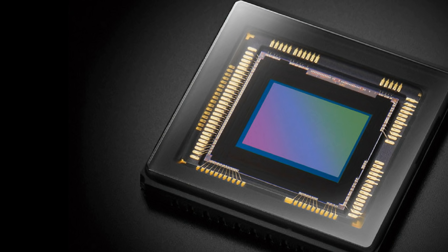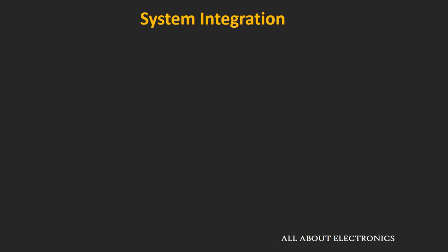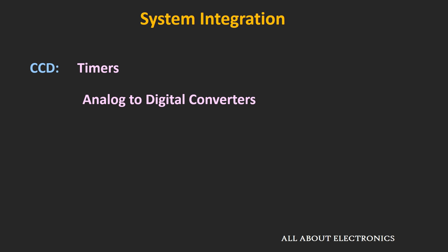Now that we have understood how CCD and CMOS sensors work, let's compare these two technologies. First, let's compare them in terms of system integration. This charge-coupled device or CCD is a very old technology. In this technology, it is not possible to integrate peripheral components like timers and ADC into the main sensor. For these peripheral circuits, you will require additional chips.